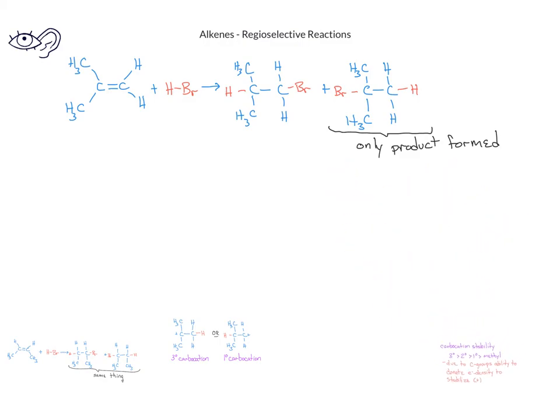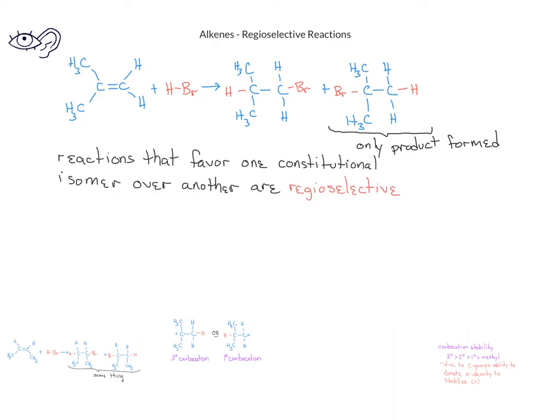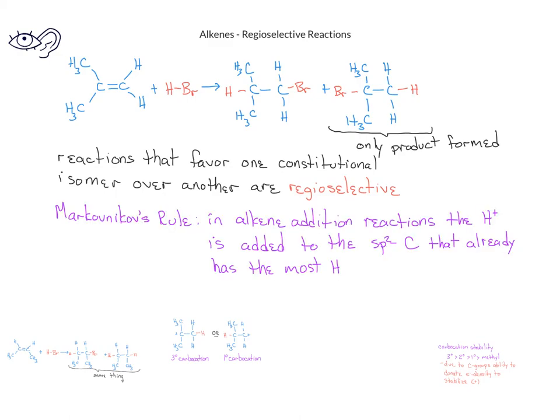Because of this order of stability, reactions like this will favor one constitutional isomer over another. These types of reactions are called regioselective reactions. We also have a general rule we can apply when we have an addition across a double bond. That rule is known as Markovnikov's rule. This says that in an alkene addition reaction, the hydrogen ion adds to the sp2 carbon that has the most hydrogens already bonded to it.